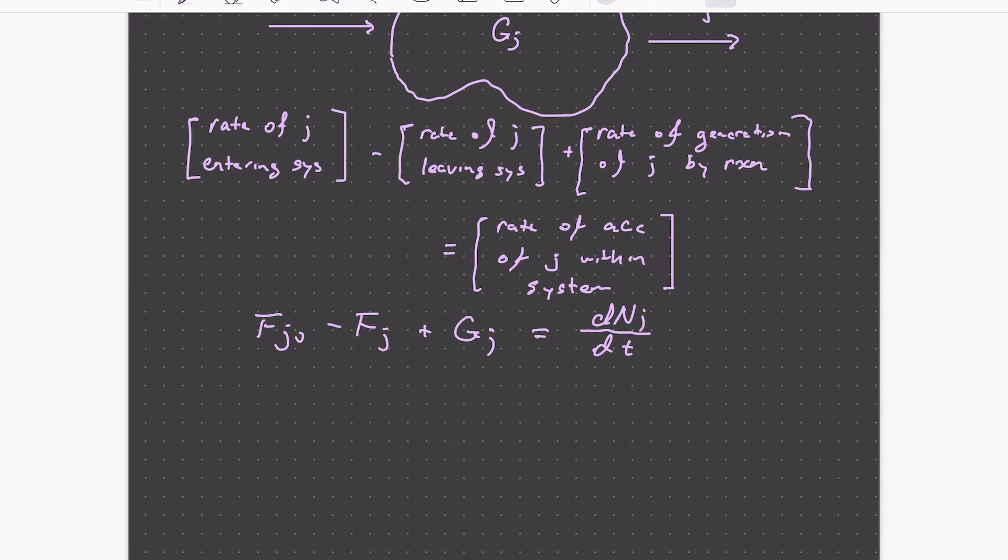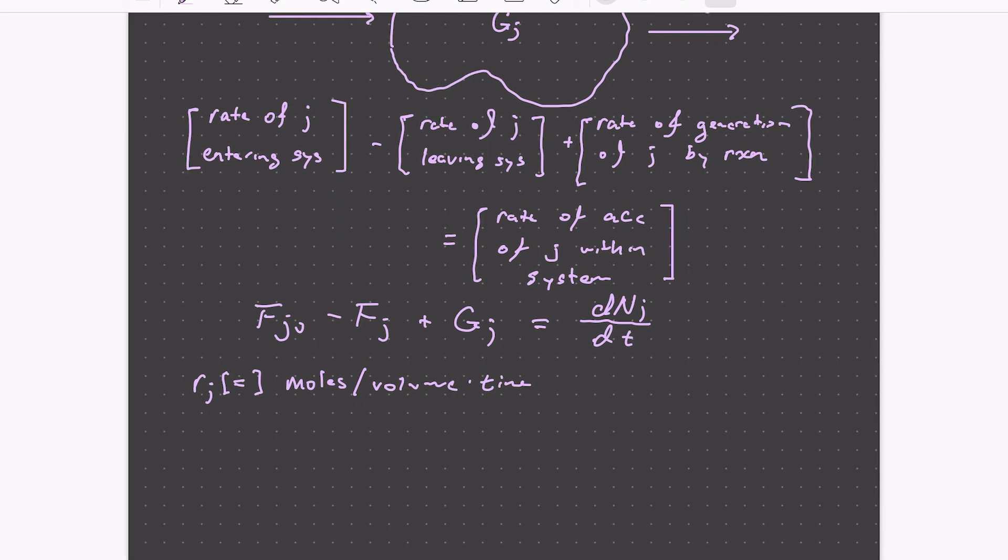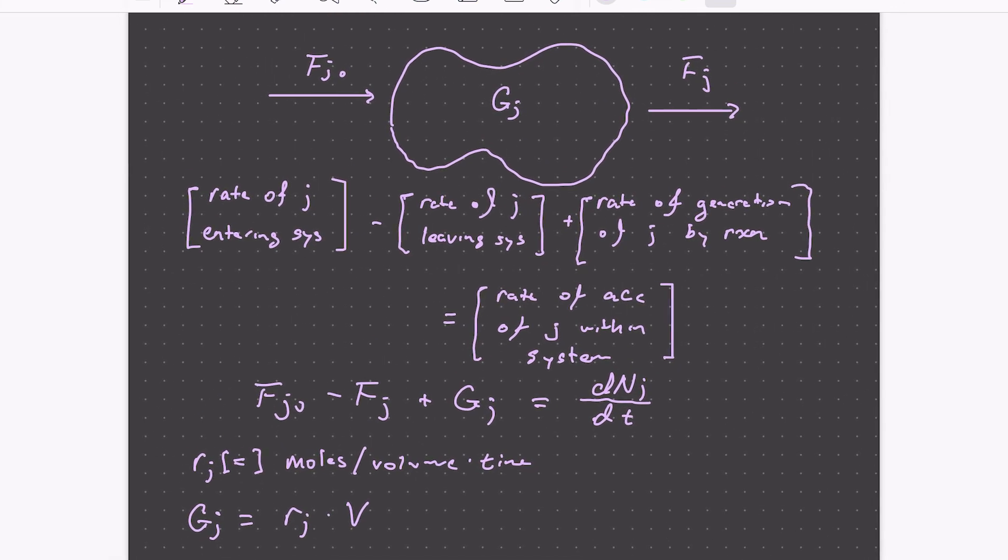So let's dig into this generation term just a little bit. The units of these different flow terms are going to be moles per time. We just discussed how the units of the rate of formation of J are moles per volume per time. So the generation rate is just going to be the rate of formation times the system volume. So we can write G of J as R of J times V, where V is the system volume, in the case that the system is spatially uniform. We discussed how the rate depends on the concentration of species, on the temperature. And so if these are spatially uniform within the system, then we can just multiply the rate of reaction anywhere times the system volume to get the overall generation rate.